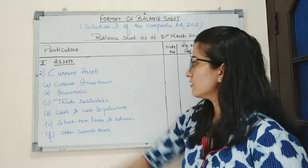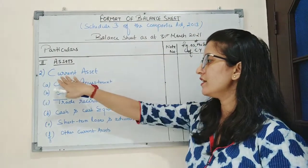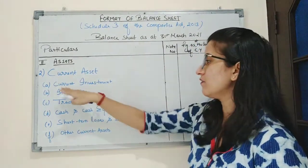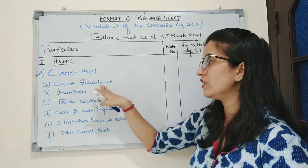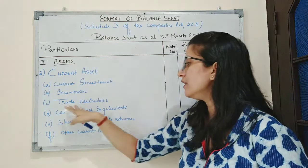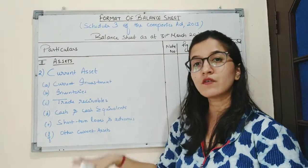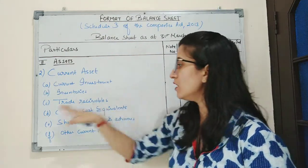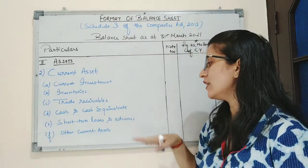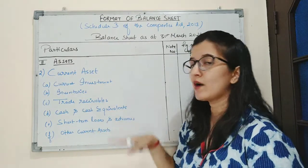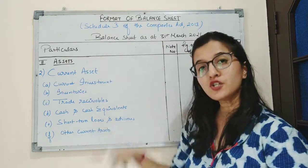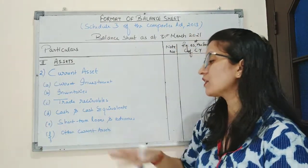The second part of assets is current assets. Current assets include six sub-parts: first is current investment — investment made for a period of less than one year; second is inventories, which are considered as stock; third is trade receivables, which includes debtors and bills receivable; fourth is cash and cash equivalents balance; fifth is short-term loans and advances — loans and advances given to another party for a short period of time; and the last is other current assets.